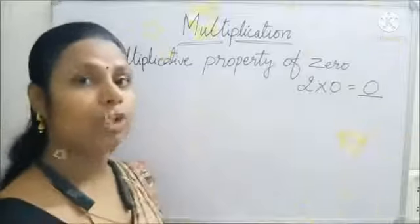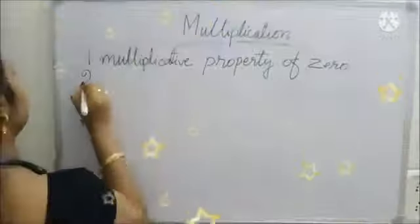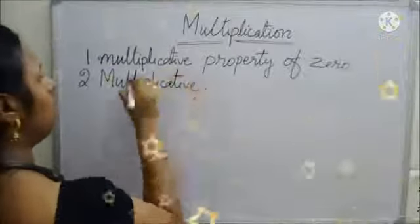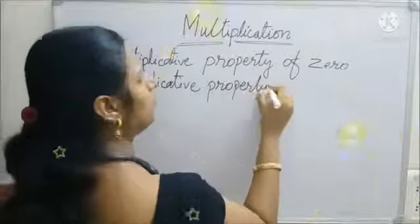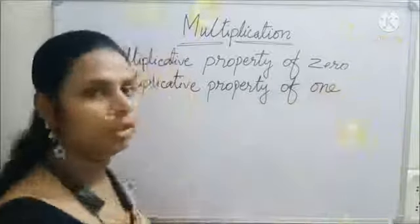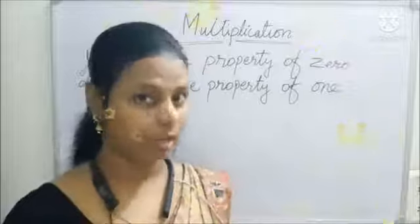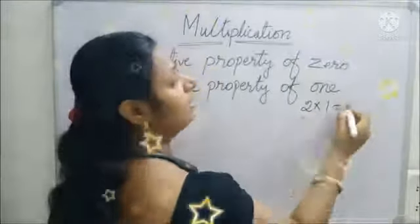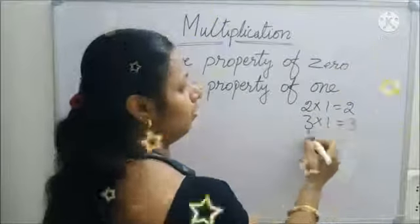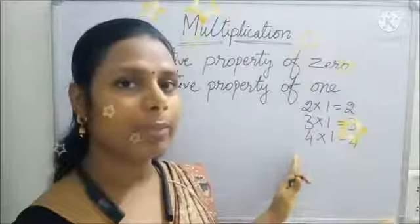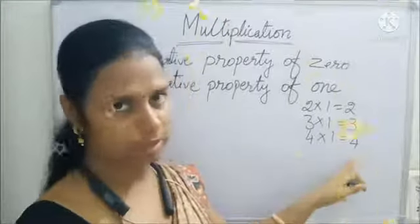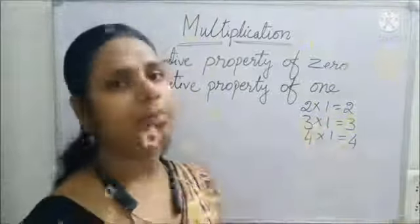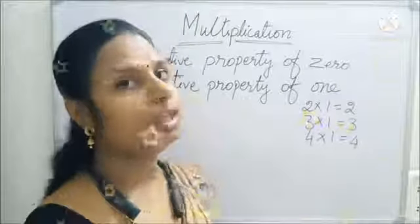The second property is the multiplicative property of one. Whenever we multiply any number by one, we get the product as the same number. Two ones are two, three ones are three, four ones are four, five ones are five. Whenever you multiply by one, you get the same number as the answer. This is the multiplicative property of one.